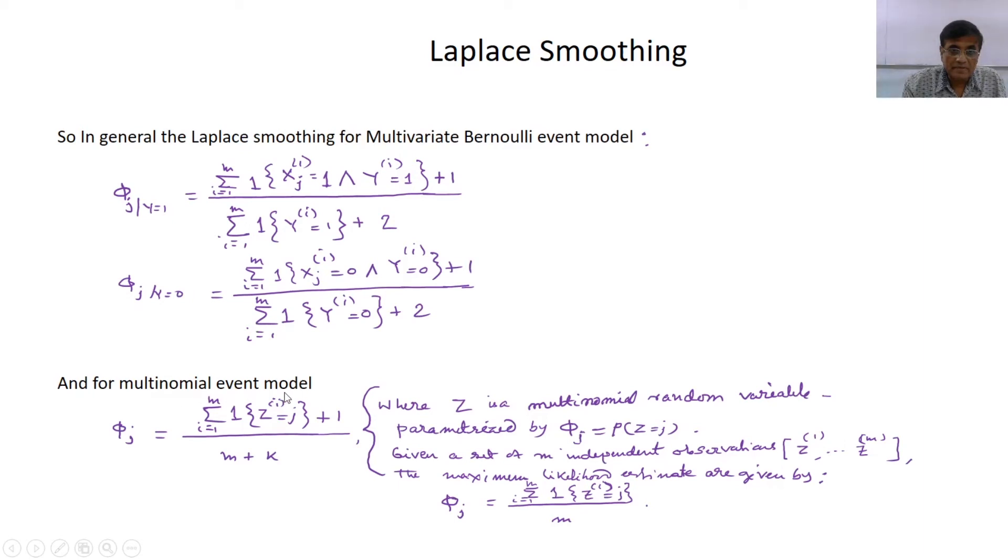For multinomial event model which we are going to discuss next, here we add 1 and here plus k, where z is a multinomial random variable parameterized by phi j. The maximum likelihood estimate gives that phi j equals indicator function z i equals j divided by m. Don't worry we will explain all this in our next lecture. Now you have understood the concept that it is very simple, but the significance is great because practically it is saving us from crashing our Naive Bayes classifier.